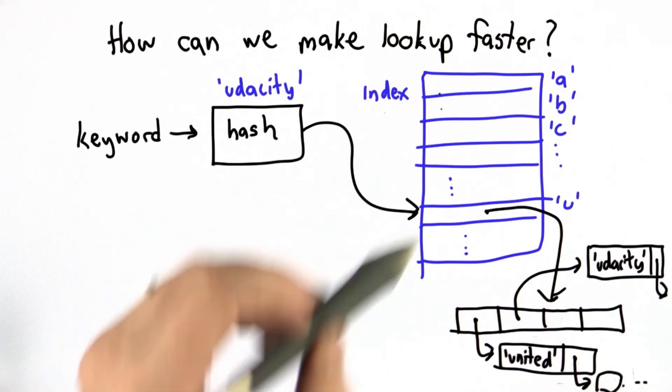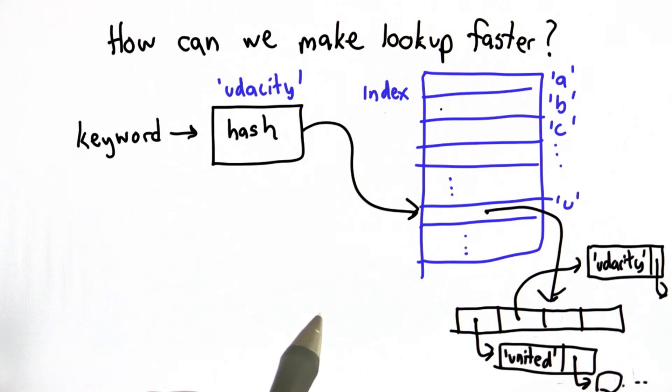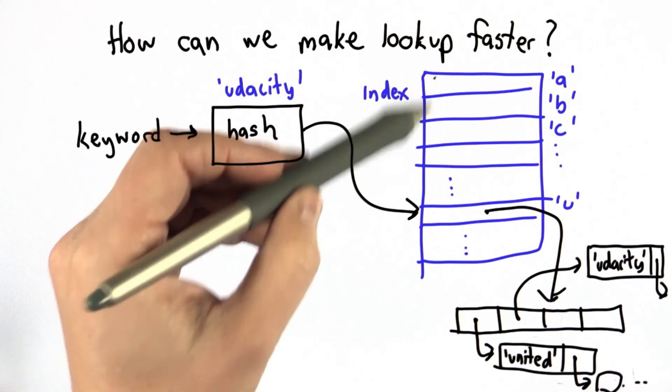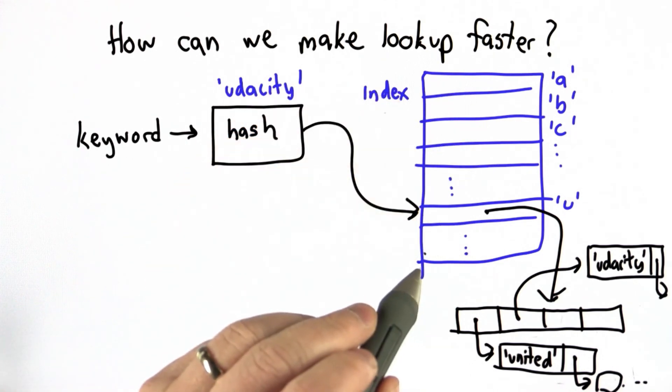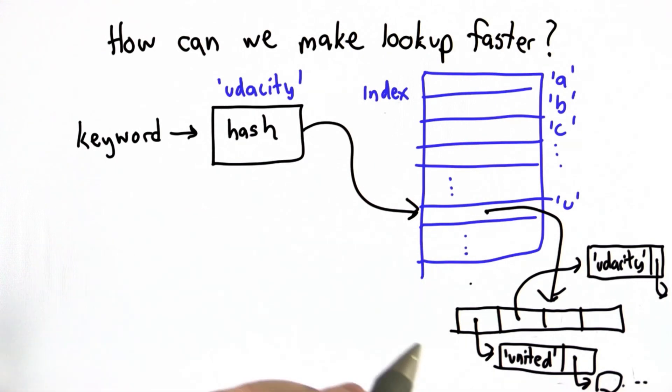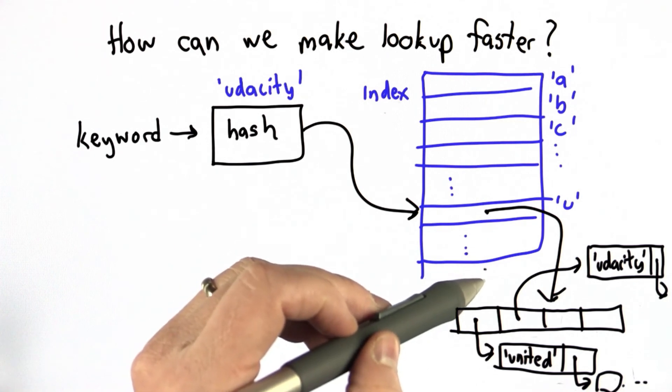At best, if we have, you know, 10 million words, well now instead of having 10 million entries to go through, we need to go through 10 million divided by, say, 26 if we have 26 letters. It's not making things much faster. It's making things maybe at best 26 times better. That assumes that all of the buckets are the same size.